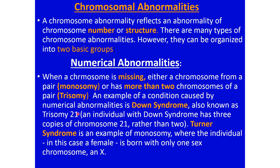In Down syndrome, every cell contains 47 chromosomes rather than 46, due to an extra copy of chromosome 21. Sometimes the resulting cells may contain fewer chromosomes than the parent — if one chromosome less is present, it is called monosomy, where one member of a pair is missing. A typical example is Turner syndrome, an example of monosomy, where the individual is born with a single X chromosome.